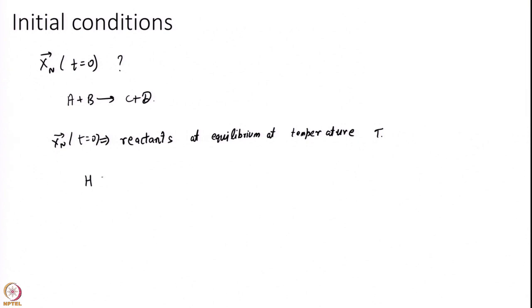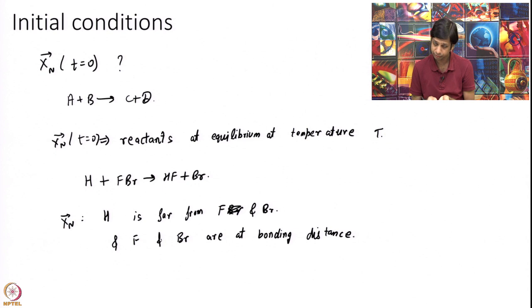What I really mean by all of this? Let us just imagine some reaction. I am just cooking up some reaction. Initially xn should be in a state where hydrogen is far from FBr and F and Br are at a bonding distance.